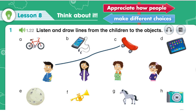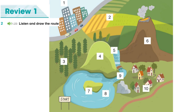Track 1.23. Review 1, Activity 2. Run into the forest. Run through the forest. Run out of the forest. Run up the hill. Run down the hill. Run over the river. Run round the village. Climb onto the rock. Jump off the rock. Swim across the lake.